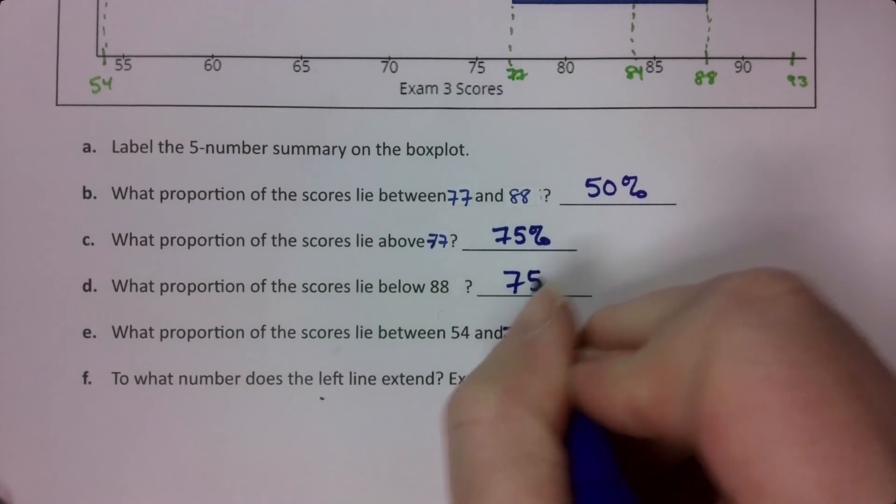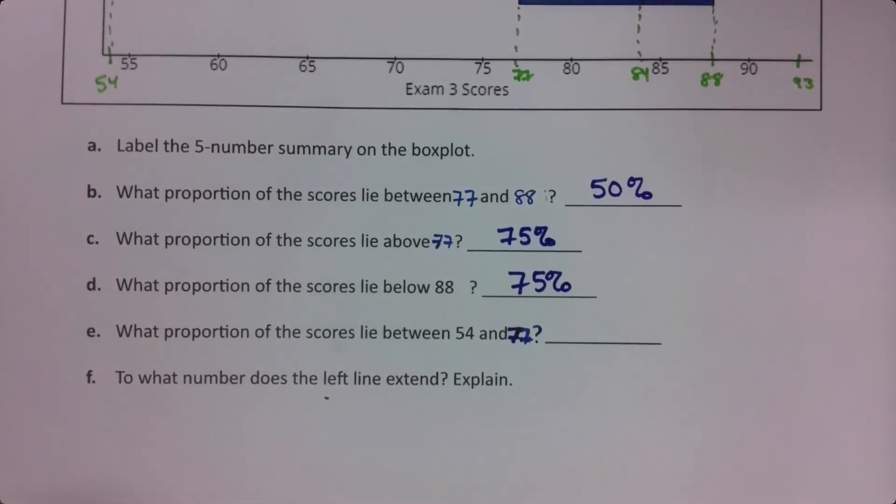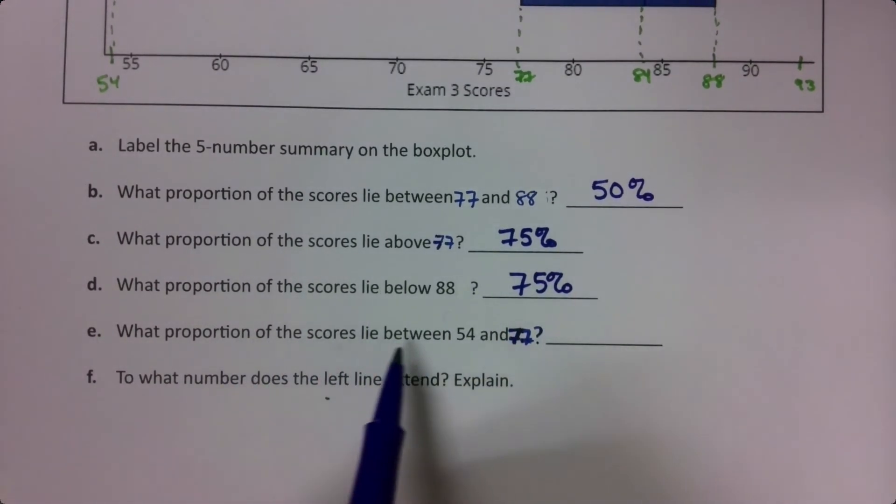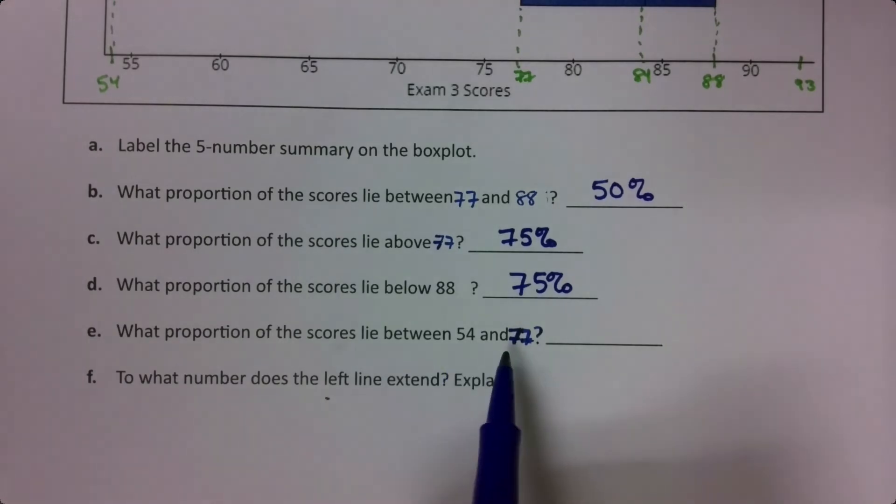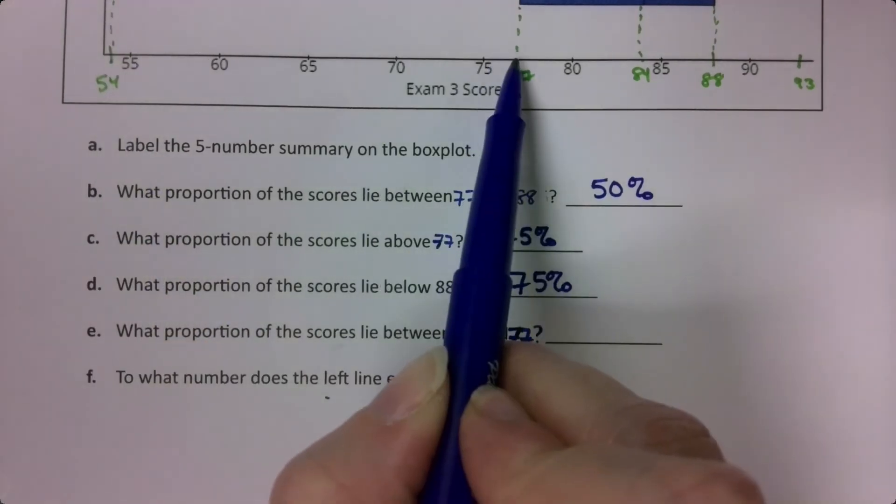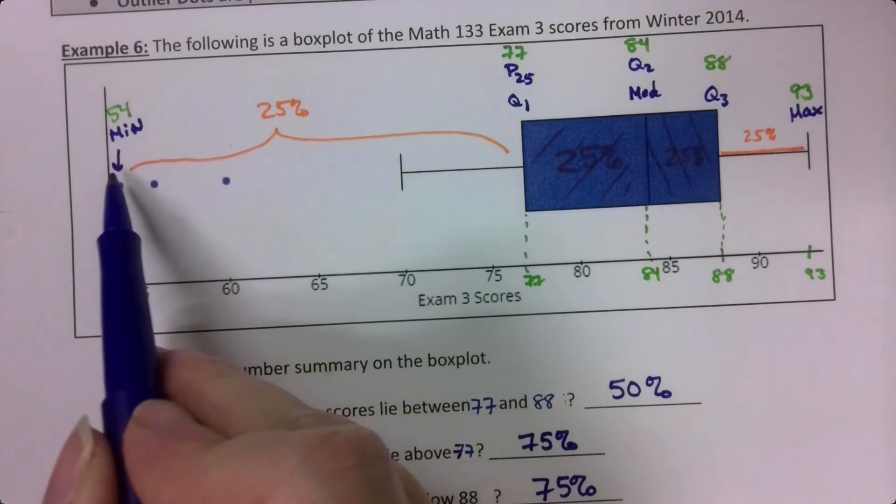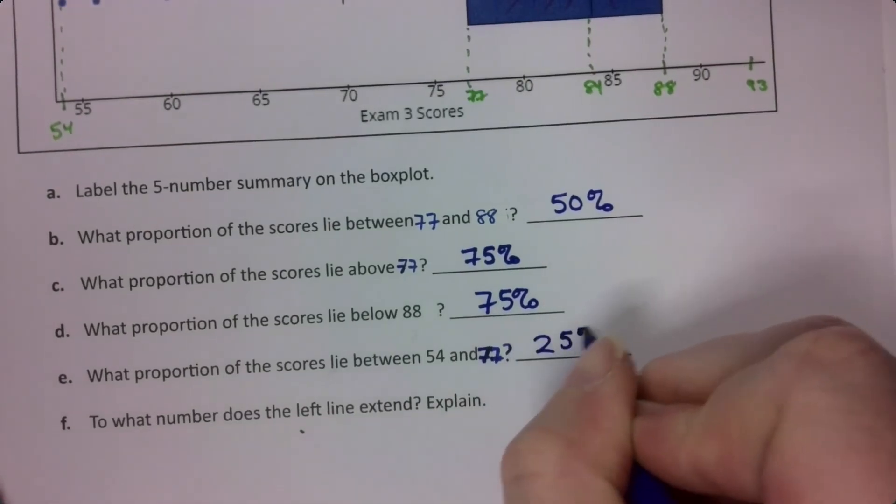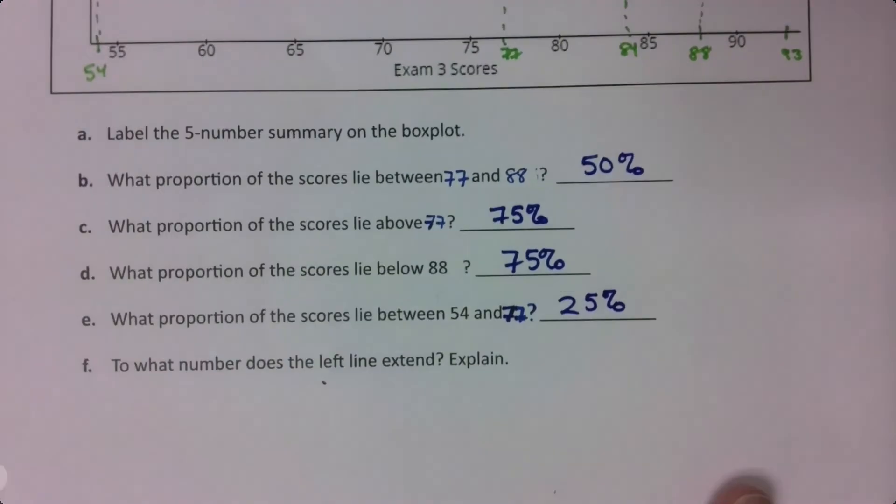What proportion of the scores lie between 54 and 77? Okay, 54 is here, it's the min. 77's right here, it's the Q1. That's Q1. 25% are there because that's what the quartile is.